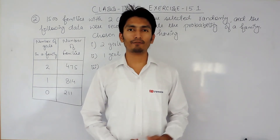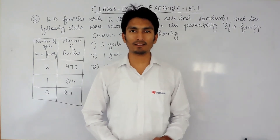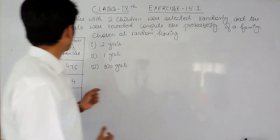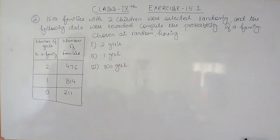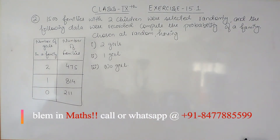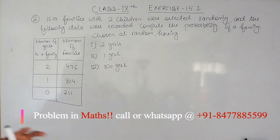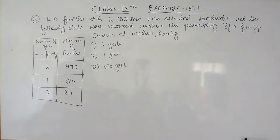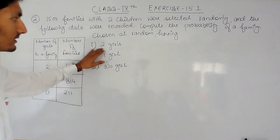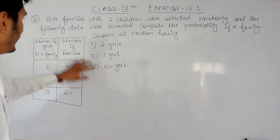Hello everyone, we are from True Maths and in this video we are going to solve question number 2 of Exercise 15.1. The question says: 1500 families with two children were selected randomly and the following data were recorded. You have to compute the probability of a family chosen at random having two girls, one girl, and no girls.